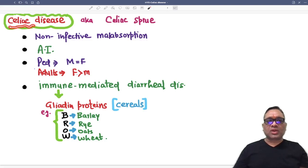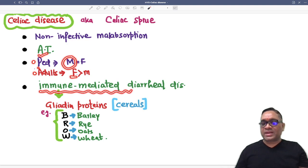In this hyaluronic shots, I am going to tell you about celiac disease, which is also known as celiac sprue. It is a non-infective malabsorption syndrome, an autoimmune disorder. In pediatric age group, males are commonly affected and in adult age group, females are commonly affected. It is an immune-mediated diarrheal disorder or malabsorption syndrome.